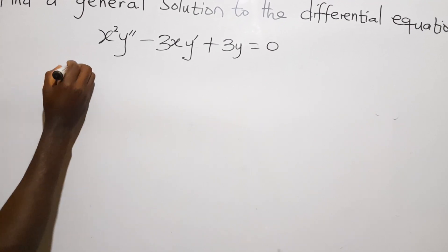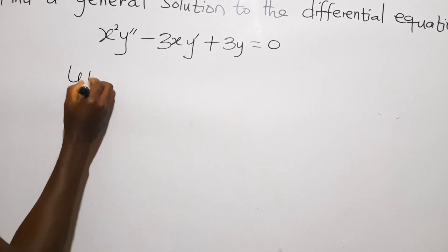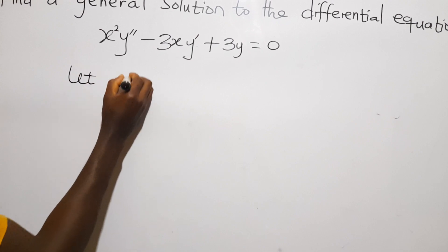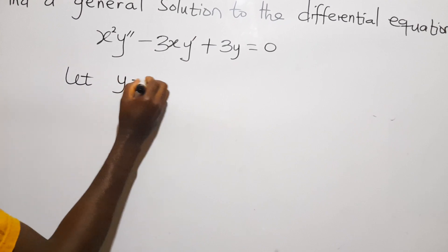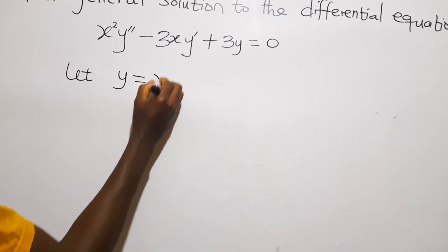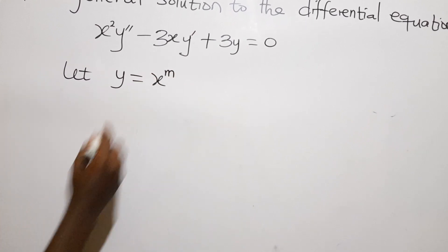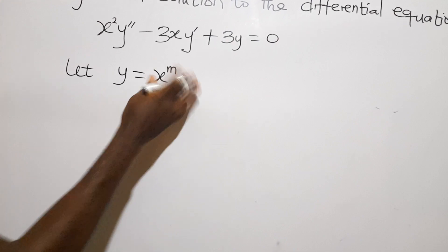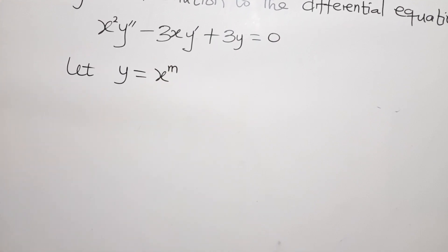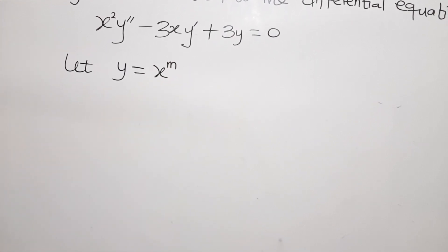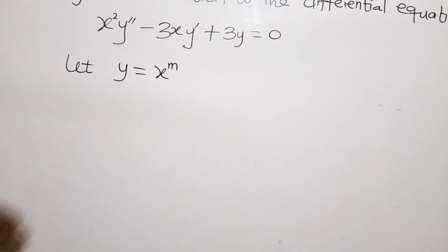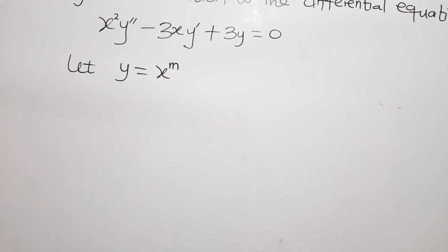we let the dependent variable y be equal to x to the power of m, where m is a constant and x is the independent variable.